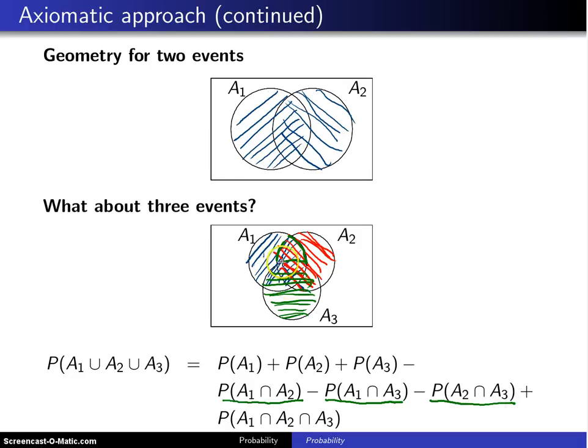Now let's pick off this interior thing and see what we have done with it. This very, very middle part got added three times here. It got subtracted three times here, which means it has to get added one last time. And that's where you get the same thinking for three events for this particular result.